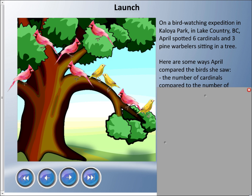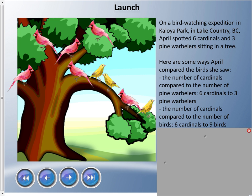Here are some ways April compared the birds she saw. The number of cardinals compared to the number of pine warblers was six cardinals to three pine warblers. The number of cardinals compared to the total number of birds was six cardinals to nine birds.